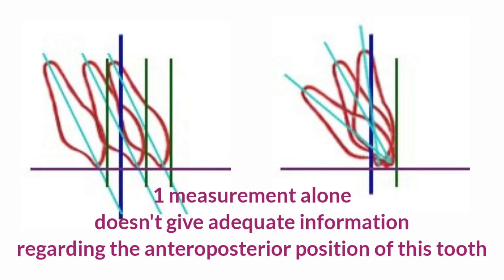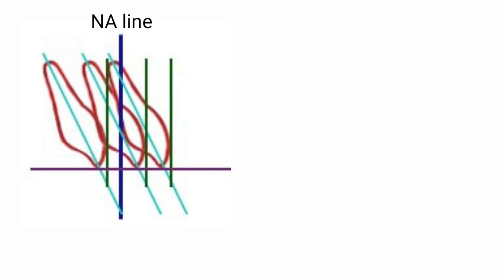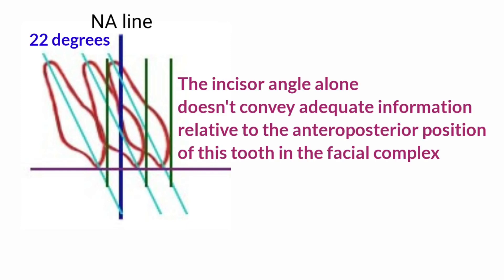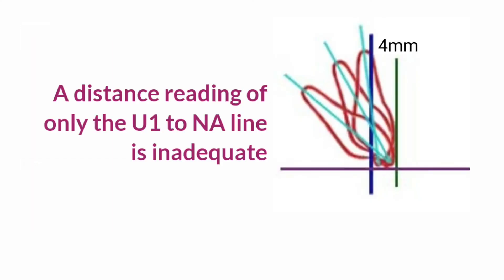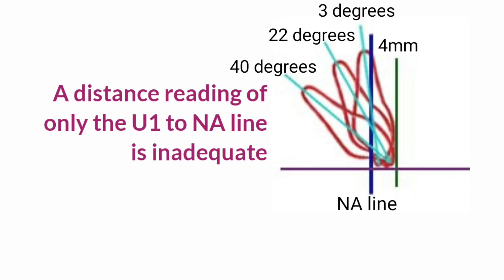The incisor angle alone or the distance of incisors alone doesn't give adequate information about the position of the maxillary incisors. For example, three teeth may have the same inclination to the NB line — 22 degrees — but different positions: minus 2 mm, 4 mm, and 8 mm. Conversely, three teeth may be 4 mm from the NB line but have different inclinations: 40 degrees, 22 degrees, and 3 degrees.